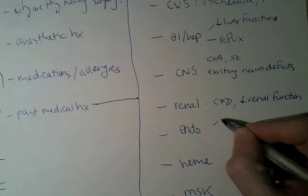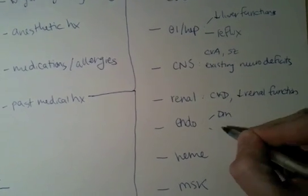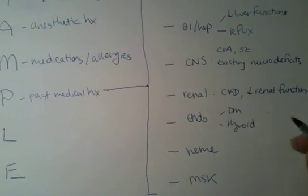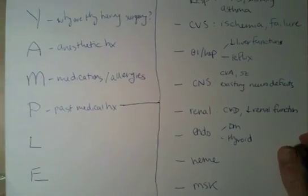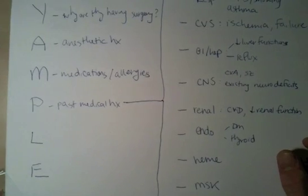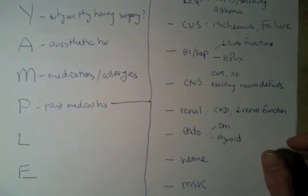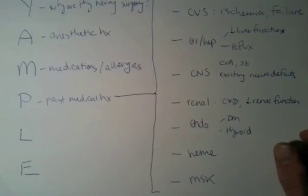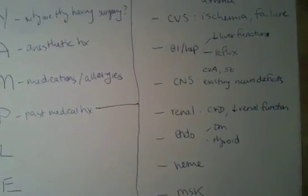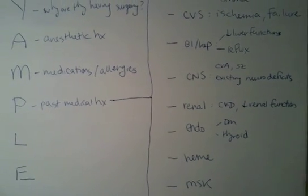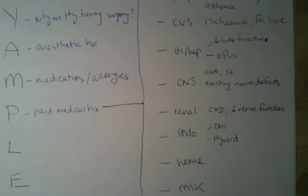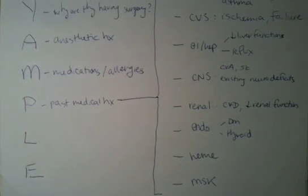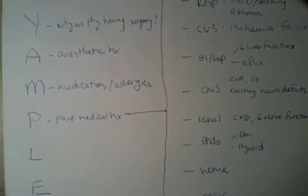For the endocrine system, you want to know about a history of diabetes or any thyroid problems. Diabetes is a big thing because surgery is a stressful situation, which can cause a dramatic increase in blood sugar and could potentially tip someone into diabetic ketoacidosis if their blood sugar is not controlled. On the other side, since people are fasting around the time of surgery, they can potentially go hypoglycemic as well.